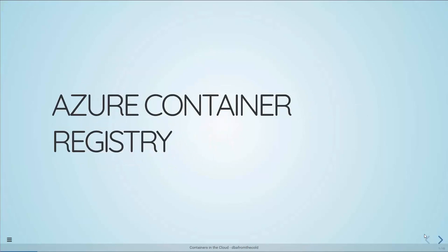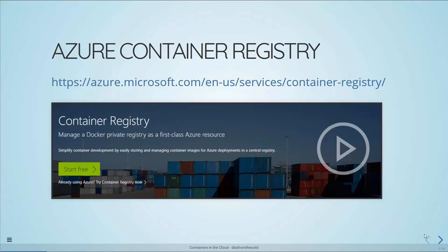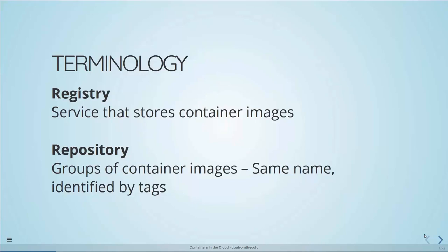The Azure Container Registry is a private managed registry in the cloud that we can use to push container images. 'Private' means only the people we grant access to have access to it, and 'managed' basically means we don't configure the storage — it's all handled by Microsoft in the background. Let's have a quick refresh of terminology. A registry is a service, usually remote, that stores container images — Azure Container Registry is one, Docker Hub is another. A repository is a group of container images, all with the same name, identified by tags. On Docker Hub you'd see microsoft-mssql-server with tags like 2017, 2017 CU1, CU2, CU3.